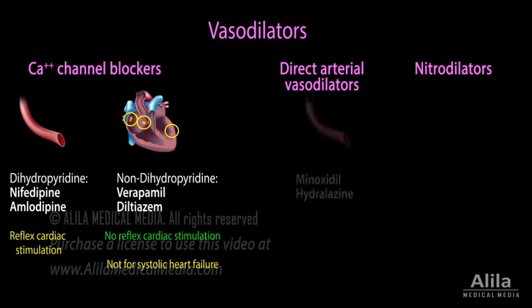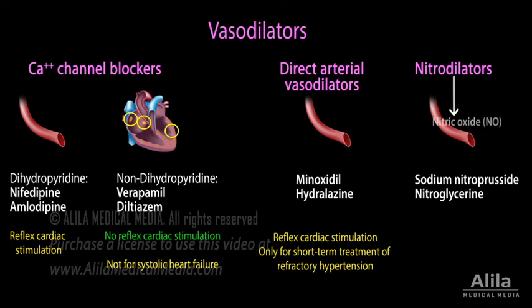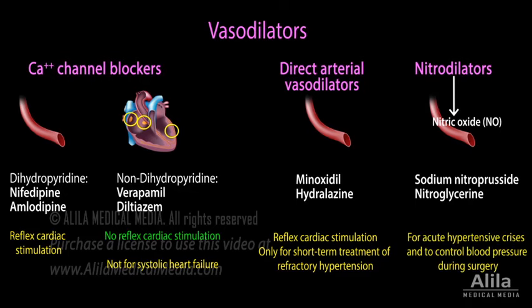The mechanisms of direct arterial vasodilators are not entirely clear. They can cause reflex tachycardia and are only used for short-term treatment of refractory hypertension. Nitrodilators act by releasing nitric oxide, a powerful vasodilator. They are administered intravenously to manage hypertensive crises and to control blood pressure during surgery.